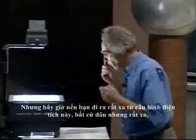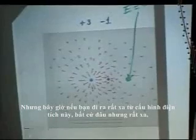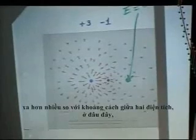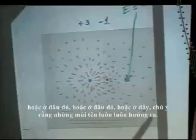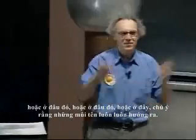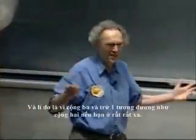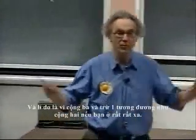But now if you go very far away from this charge configuration, anywhere, but very far away, much farther than the distance between the two charges, so somewhere here, or somewhere there, notice that always the arrows are pointing away. The reason is that plus three and minus one is as good as a plus two if you're very far away.